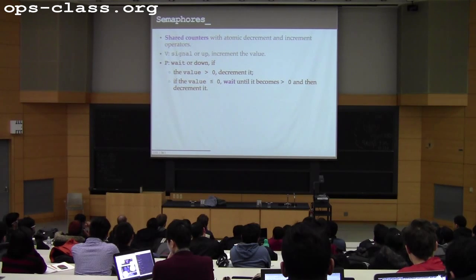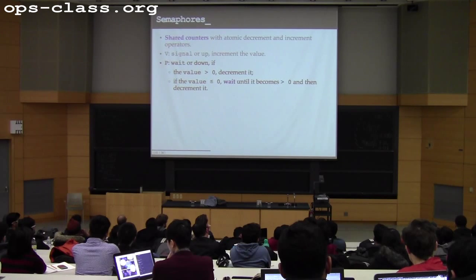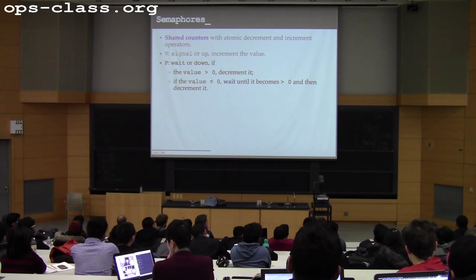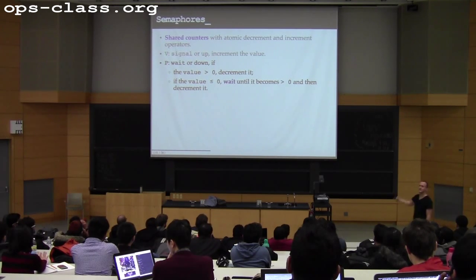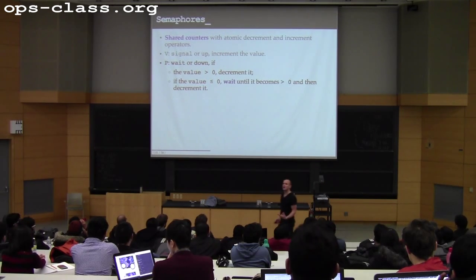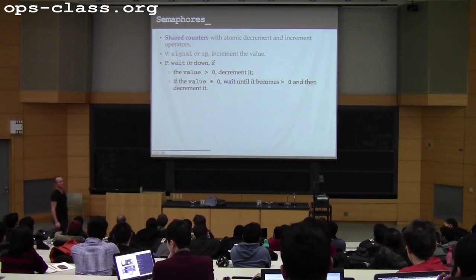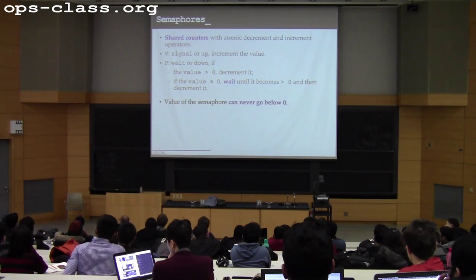Semaphores look a little like locks. V is like lock release — it will never sleep and will always succeed. P is like lock acquire — it will sleep if the value is about to go below zero, otherwise it proceeds. The names come from Dutch: V stands for 'verhogen,' meaning increase. P's origin is debated — there are many theories on Wikipedia, including made-up words that aren't even Dutch. They're Dutch because Dijkstra invented them.